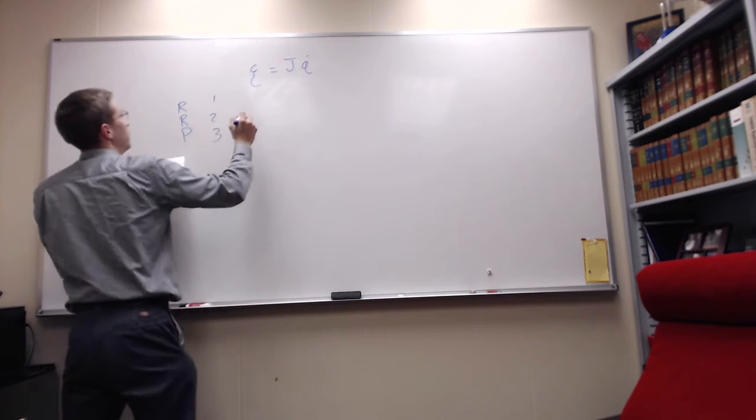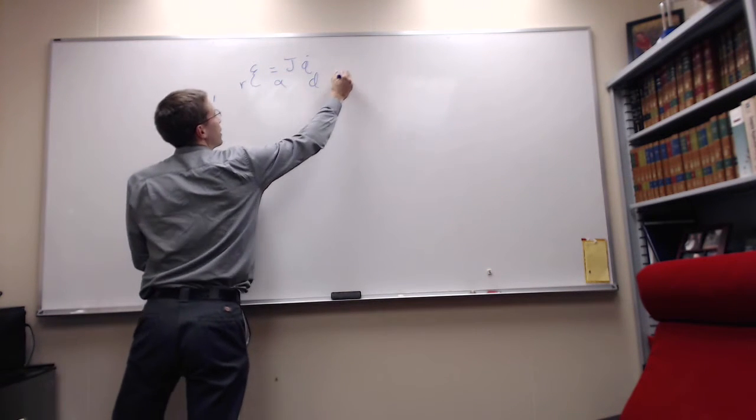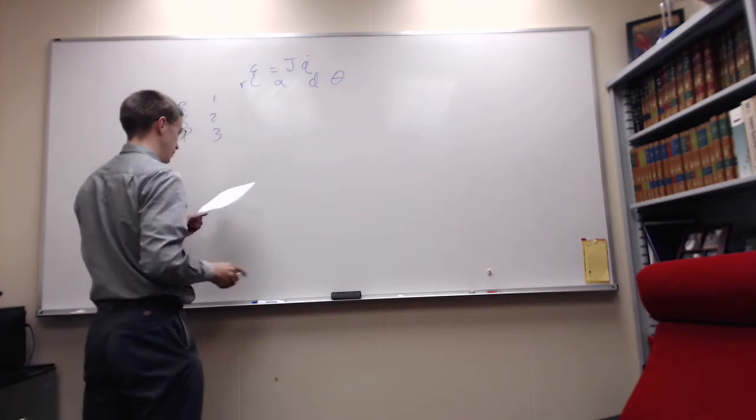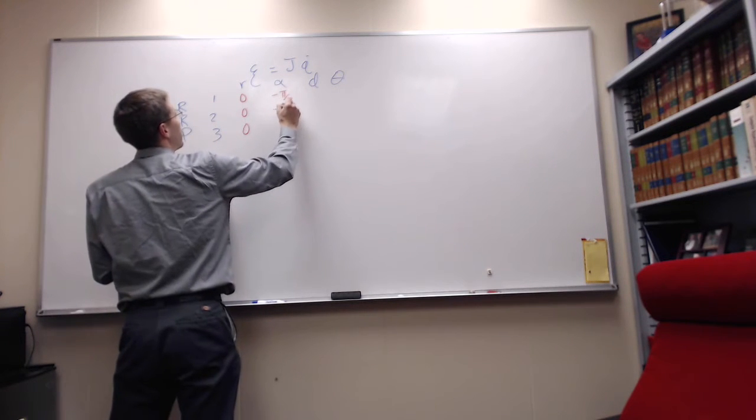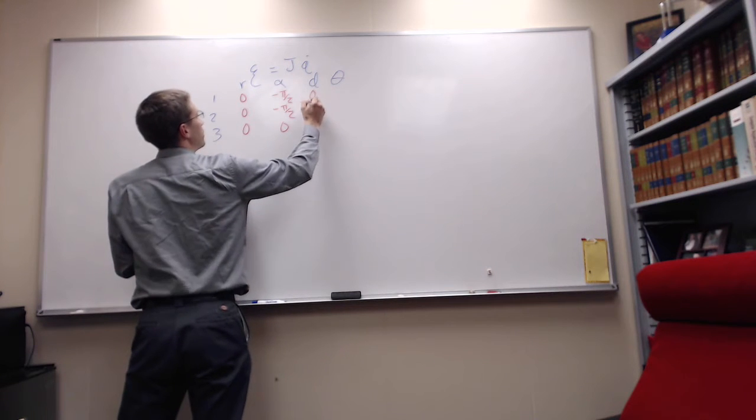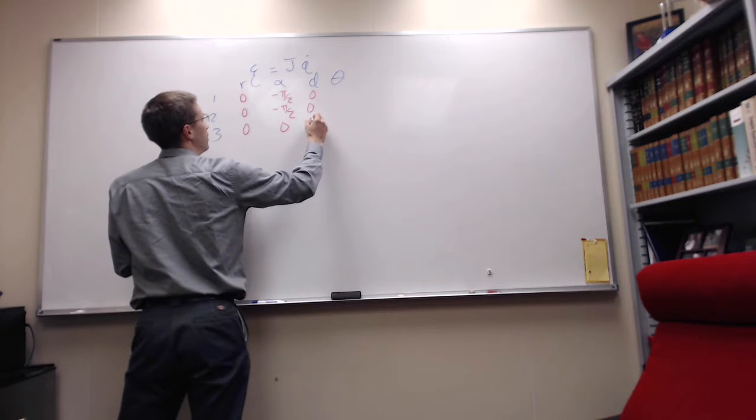Joints 1, 2, and 3. We've got our R values, our alpha values, our D values, and our theta values. And those are going to be 0, 0, 0, negative pi over 2, negative pi over 2, 0, 0, 0, D3. So it's our variable here, and then our first two are revolute. So we've got theta 1 star, theta 2 star, 0.